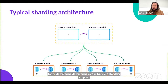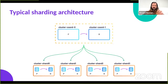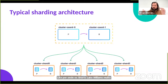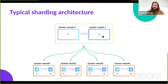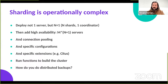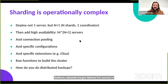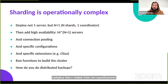A typical sharding architecture with a relational database like Postgres will look like this: at the bottom you have all the shards where data is split into chunks, each going to a specific server that potentially has a replica for high availability. On top of that you have coordinators — also called routing or transaction routers — that receive queries as the entry point and send them to the appropriate shard or shards. These coordinators may also be highly available. Operationally, this becomes very complex: you need to deploy multiple servers, multiply by the number of HA instances, handle connection pooling, specific configurations, extensions, distributed backups, and more.